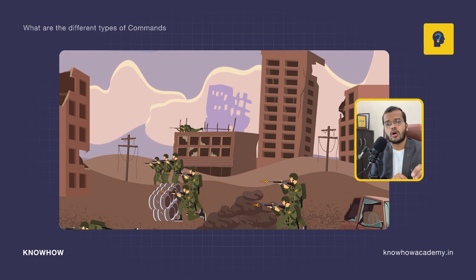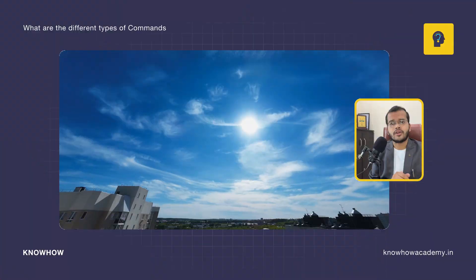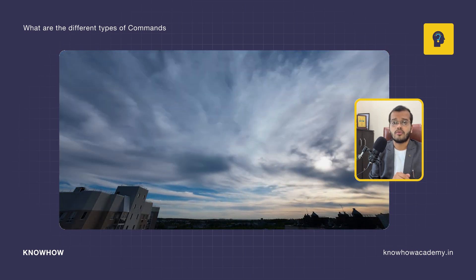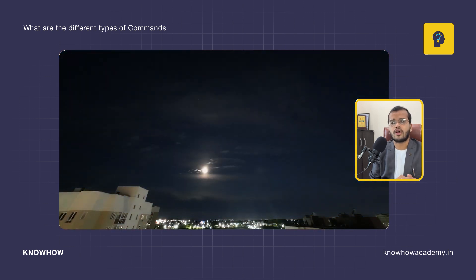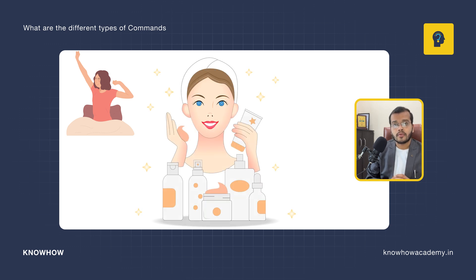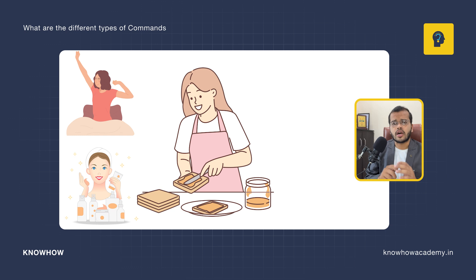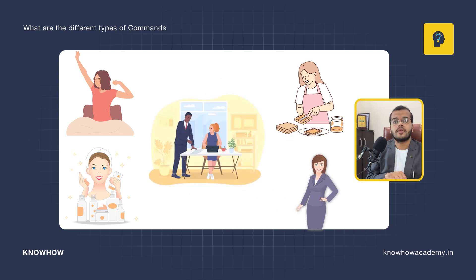At every single point, without the command or orders received from their officers, they are not going to do any sort of work. In the same way, another example we face in our day-to-day life: from the time we wake up until we go back to sleep, every single work we do follows a structured procedure. We wake up, get freshened up, have breakfast, get ready for work, and go to work. Whether you work from home or office, you follow the orders and commands of your boss. Every single step in our day-to-day life follows some commands and orders.